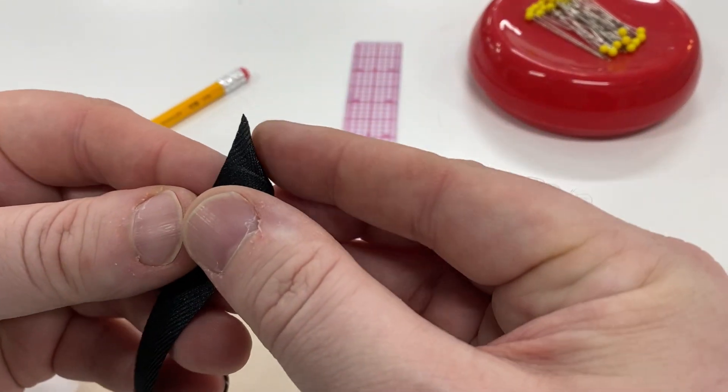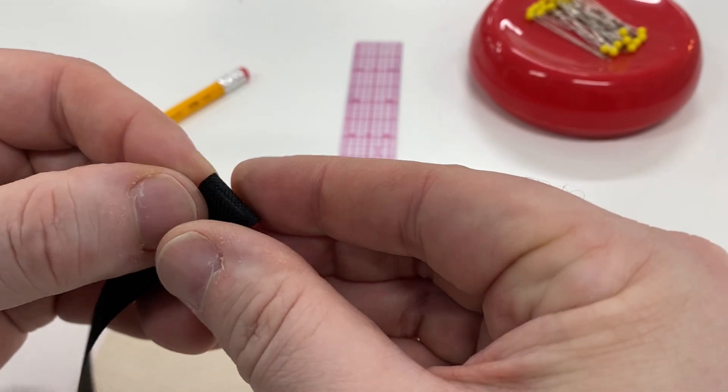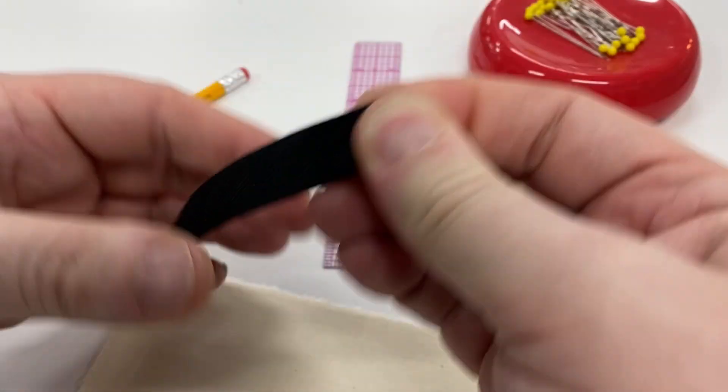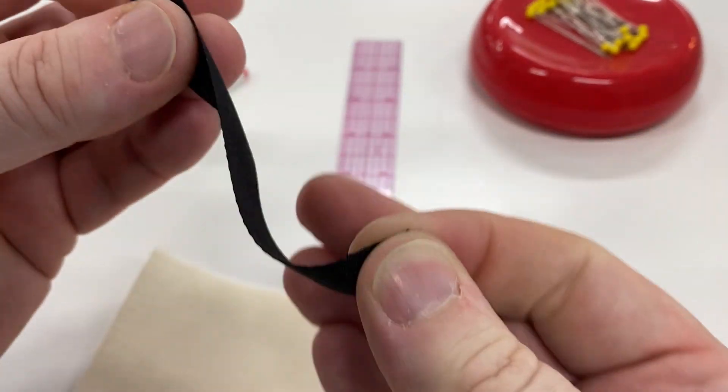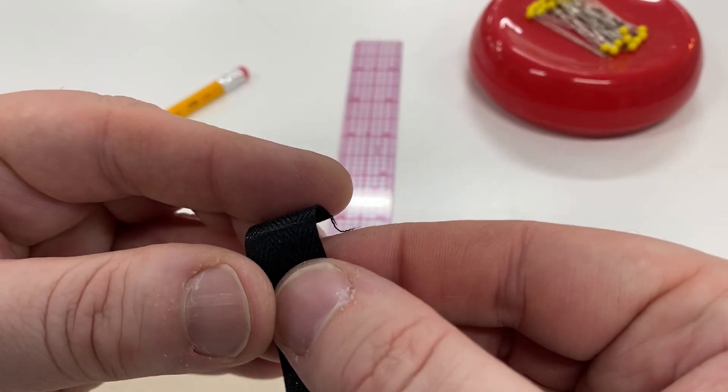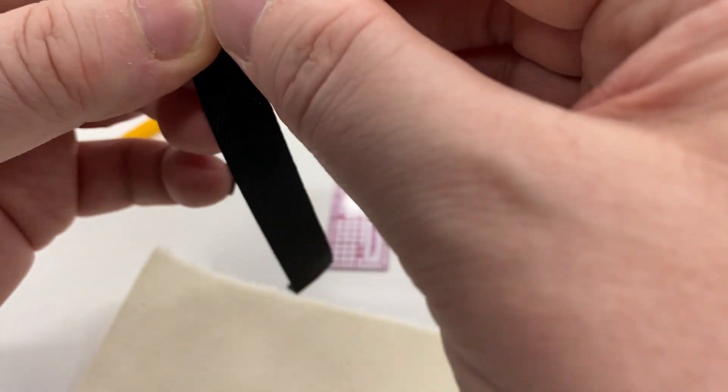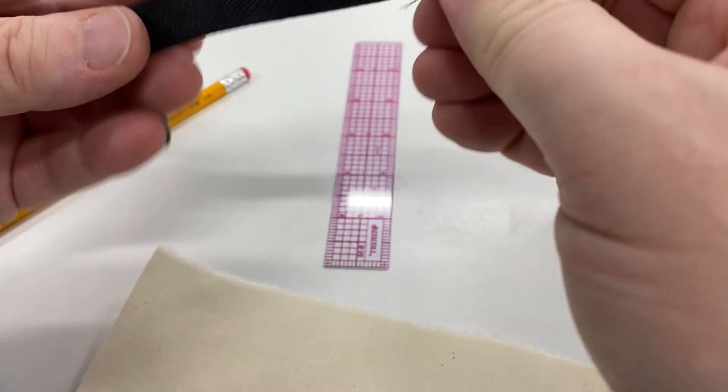Now I know where those fold. I can go ahead and crease them a little bit if I want to give it some memory so I know where it stays. If you want to, you can take this over to the iron and press it. I'm going to skip that step for now because I'm in a bit of a hurry.